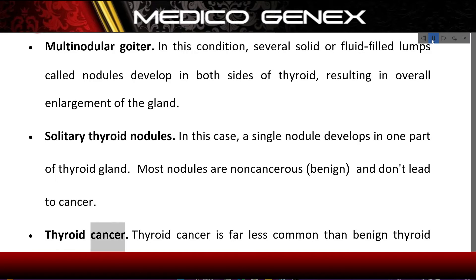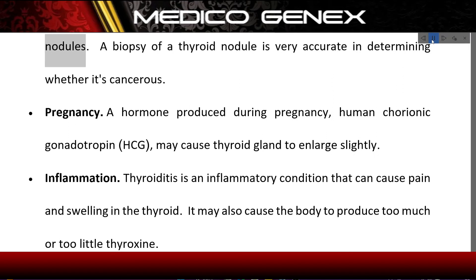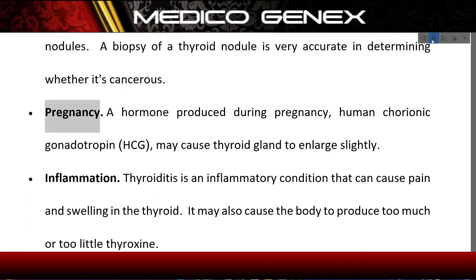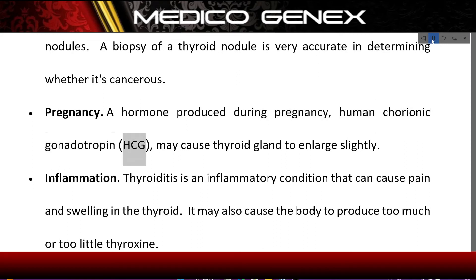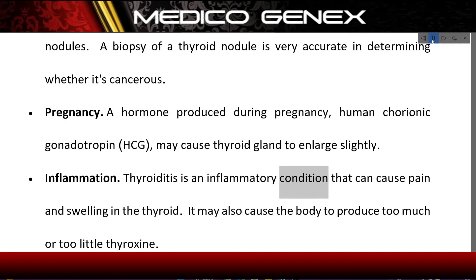Thyroid cancer: Thyroid cancer is far less common than benign thyroid nodules. A biopsy of a thyroid nodule is very accurate in determining whether it's cancerous. Pregnancy: A hormone produced during pregnancy, human chorionic gonadotropin, may cause the thyroid gland to enlarge slightly. Inflammation: Thyroiditis is an inflammatory condition that can cause pain and swelling in the thyroid, and may also cause the body to produce too much or too little thyroxine.